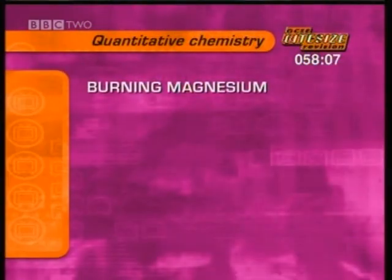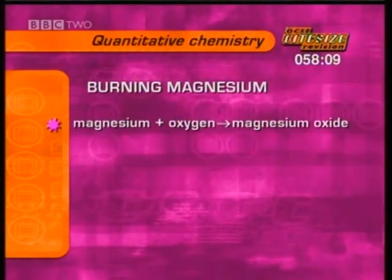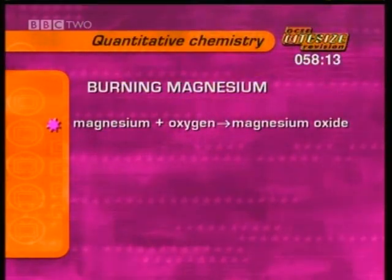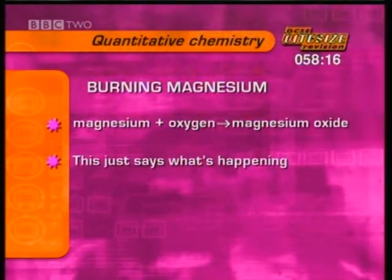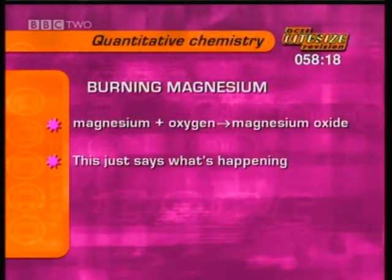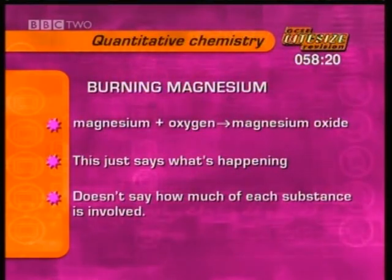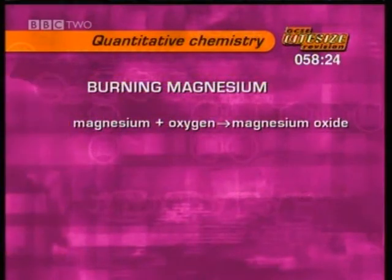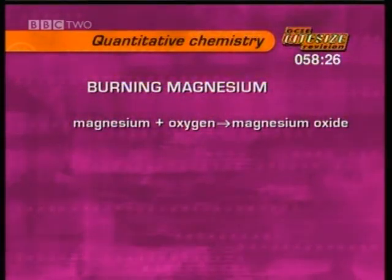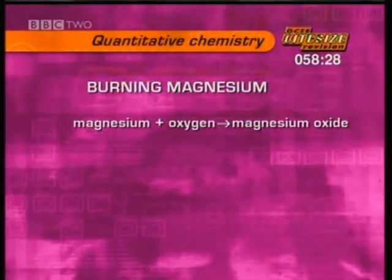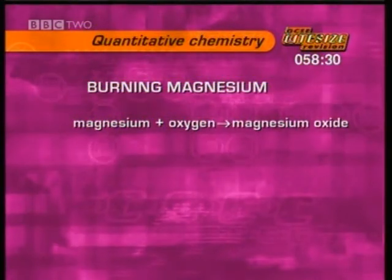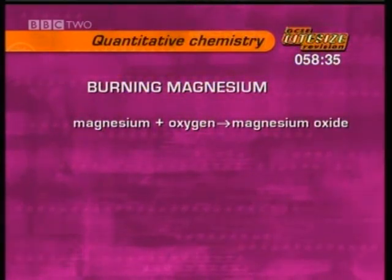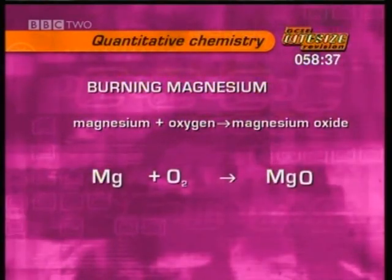If you burn a piece of magnesium, the word equation for the reaction is: magnesium plus oxygen gives magnesium oxide. That tells you what's happening but nothing about the quantities of each substance involved. That's where the balanced chemical equation comes in — first, replace the words with the correct chemical formulae, with reactants on the left and products on the right.